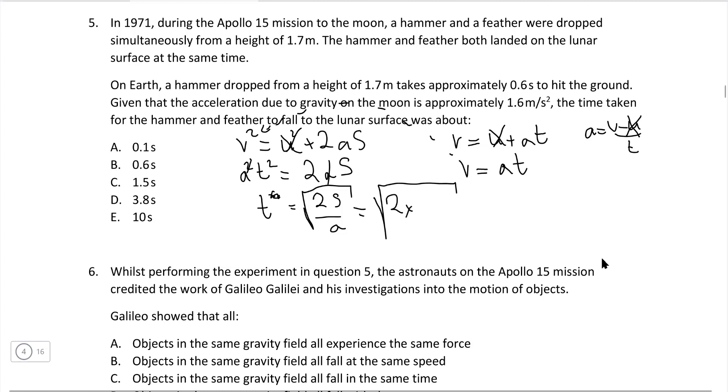And now let's square root that expression as well. And let's plug in some numbers. So it's going to be 2 times the height is 1.7 meters. And the acceleration on the moon is 1.6. Putting that in a calculator, we're going to get 1.46 seconds. So correct answer is C.